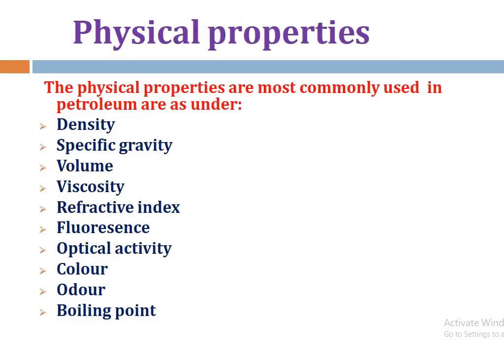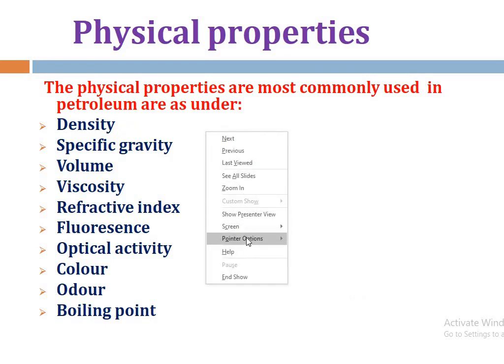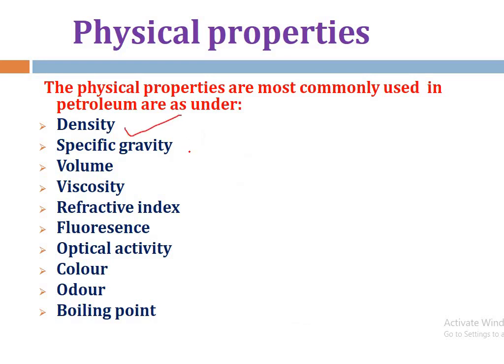Now turning to the physical properties of petroleum: the main important physical properties include density, specific gravity, volume, viscosity, refractive index, fluorescence, optical properties, color, odor, and boiling points.